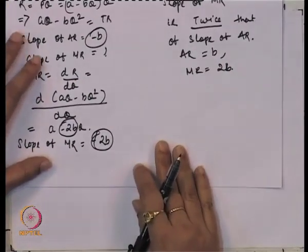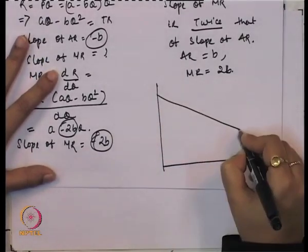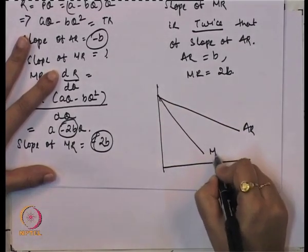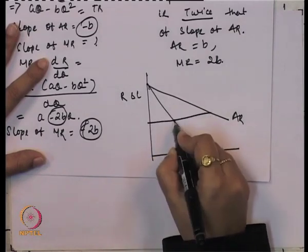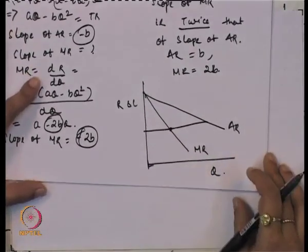Graphically, the average revenue curve and the marginal revenue curve are shown with revenue and cost on the vertical axis and quantity on the horizontal axis. The MR curve lies halfway between the AR curve and the price axis. For a linear demand function P = A − BQ, the slope of AR is B and the slope of MR is 2B, so MR always lies below the AR curve.